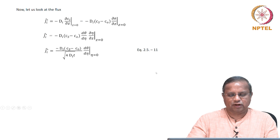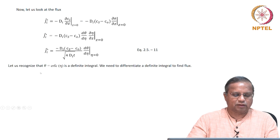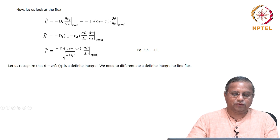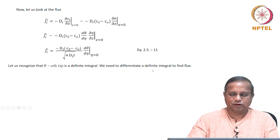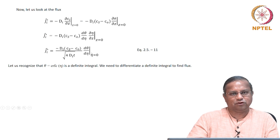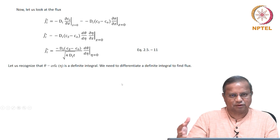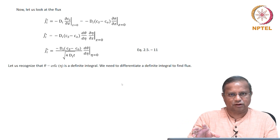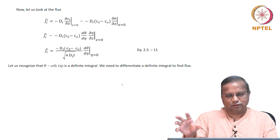θ equals the complementary error function of η, which involves a definite integral. To find the flux, we need to differentiate θ with respect to η — that is, we are differentiating a definite integral. This is not trivial; it is a different concept altogether.